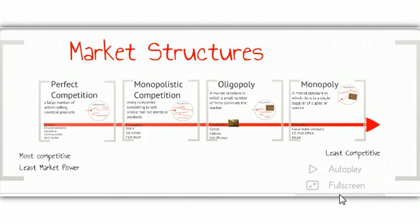So on our continuum, the perfect competition is our most competitive, and that means it has the least market power. Market power refers to your ability to influence the market and your ability to set prices. In a perfect competition, you really don't have that ability. Let's go to the other opposite extreme. Let's go to a monopoly, which is the least competitive and has the most market power.